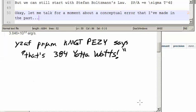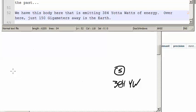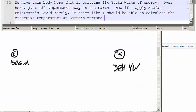Okay, let me talk about, for a moment, about a conceptual error I've made in the past. We have this body here called the sun that is emitting 384 yotta watts of energy. Over here, just 150 gigameters away, is the earth.